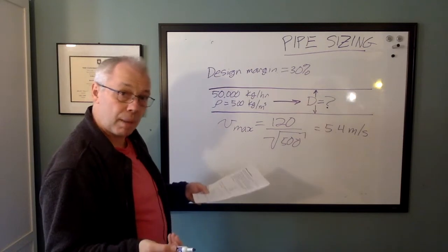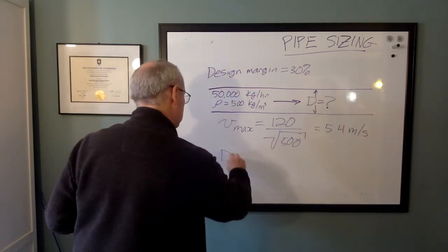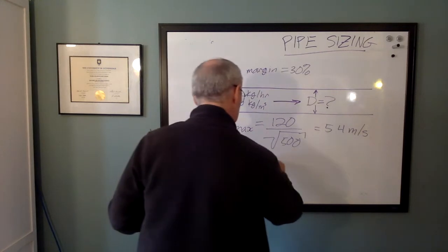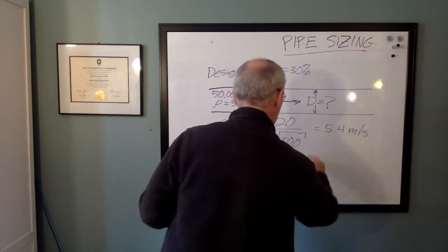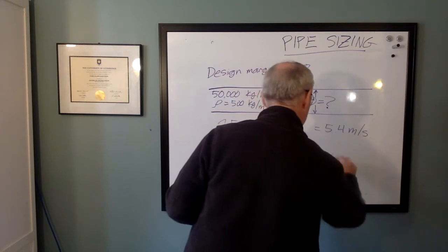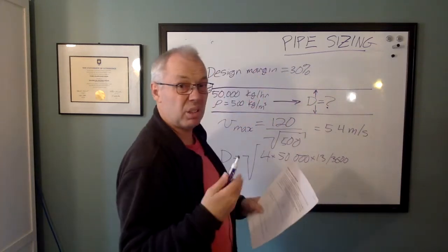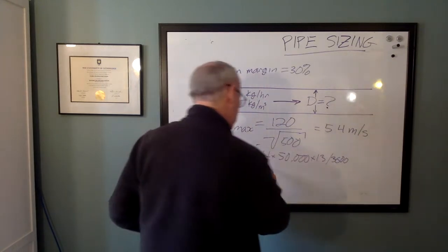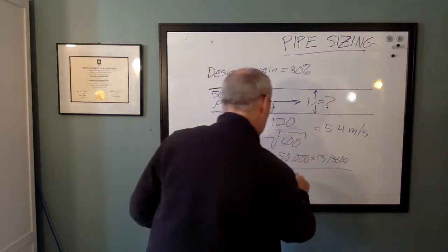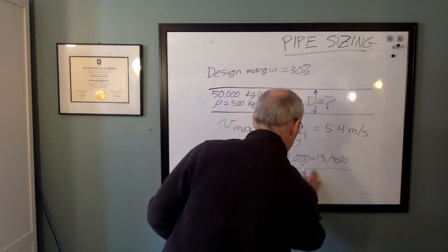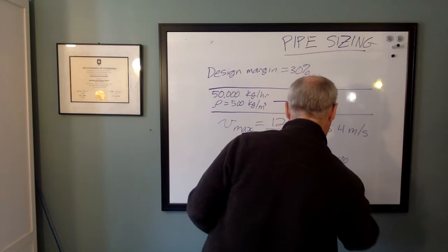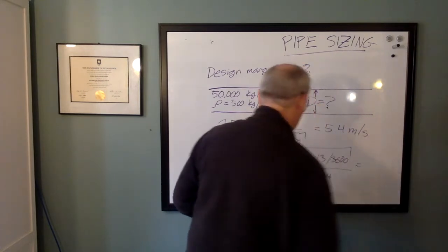So now we can calculate the diameter. The diameter is equal to the square root of 4 times 50,000 times 1.3, divide that by 3,600 to convert everything into kilograms per second. And we're going to divide that by 500 kilograms per meter cubed. We'll throw a pi in there. And our maximum velocity. And the diameter is 0.926 meters or about 92.6 millimeters.